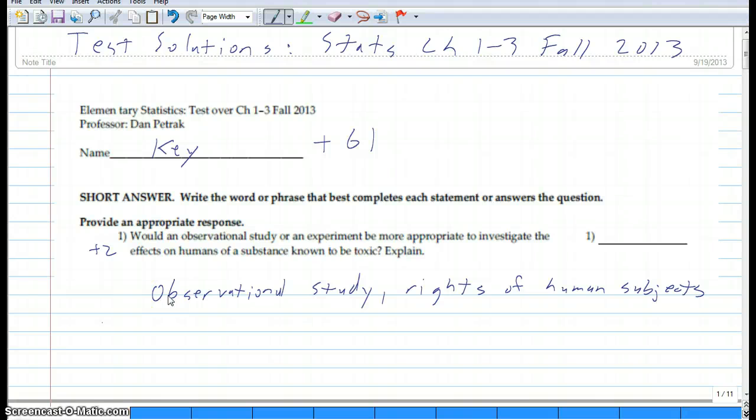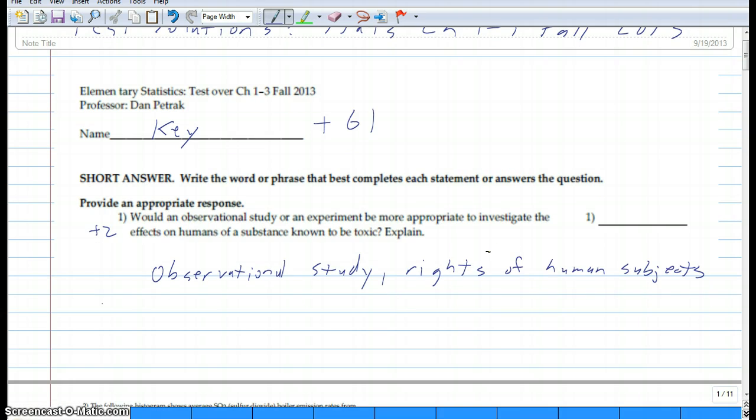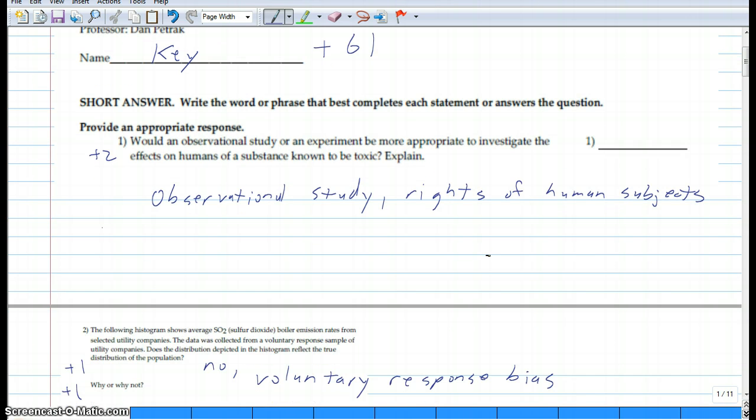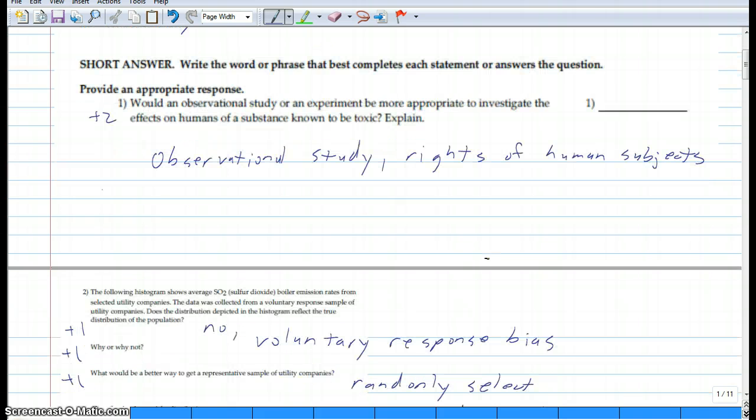Hi, this is Dan and this is a solutions video for statistics fall 2013 chapters 1 through 3 exam. There's 61 points on this test. I had one extra credit point and curved it one point. The high score was 60 out of 61. The first page almost everybody got right - obviously observational study, we don't want to hurt people with toxins.